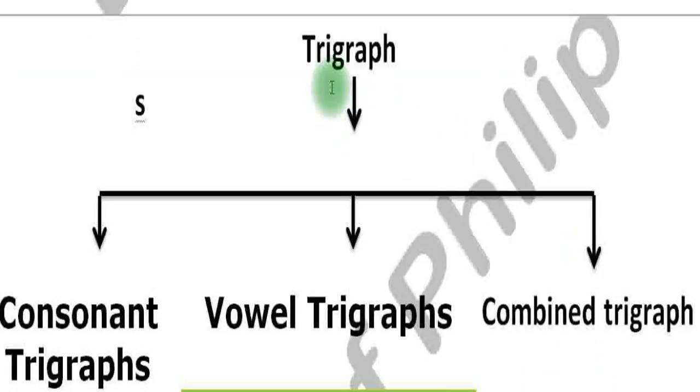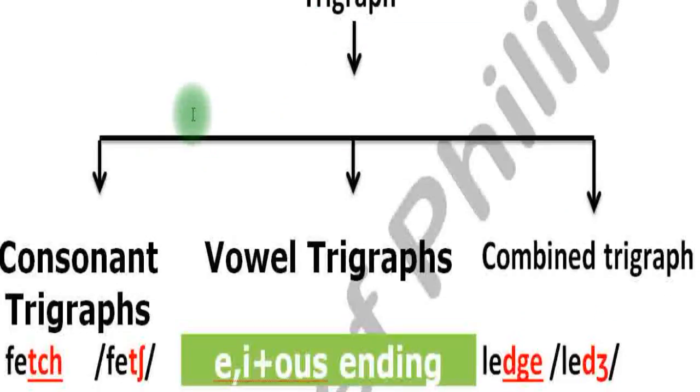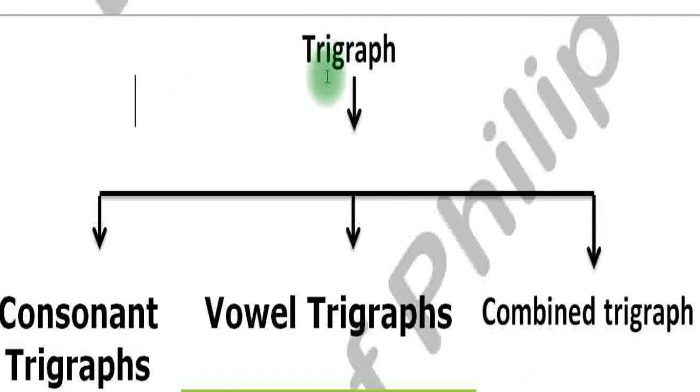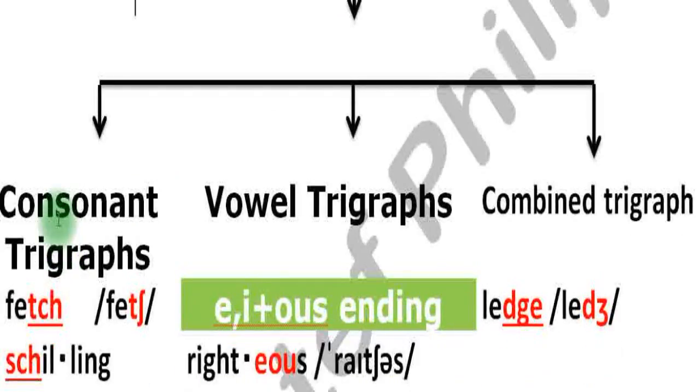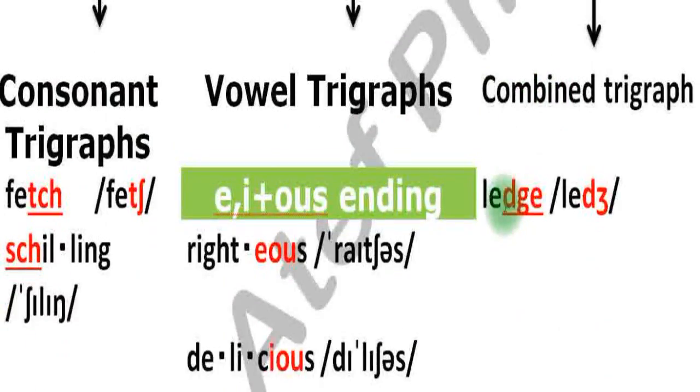Trigraphs are mainly divided into three major parts: consonant trigraphs, vowel trigraphs, and combined trigraphs.